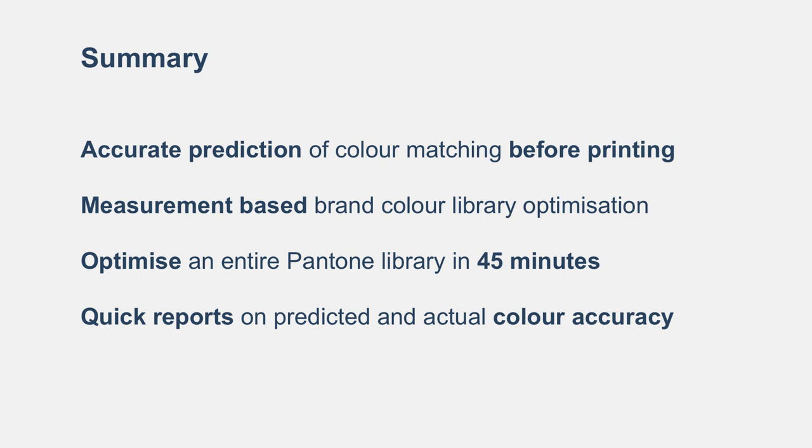To close, the four key points of what we're delivering with Brand Colour Optimiser: first, the accuracy of the prediction — that is probably the key unique element, in that you can predict before printing how accurate you're going to be. Second, it's measurement-based on every colour within the Pantone library, which is what brings in the level of quality and detail that we have. Third, we can optimise the whole library in less than an hour. And fourth, the reports are an easy way to get information out of the system to pass on with the job.